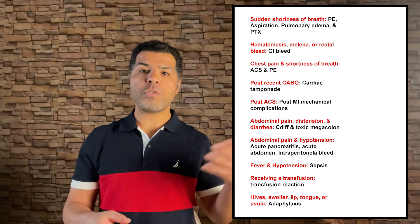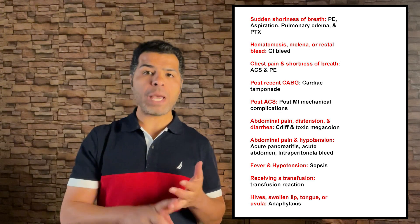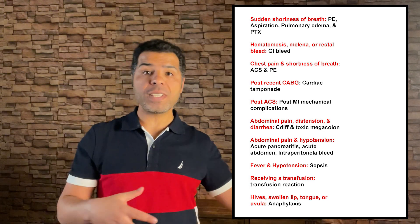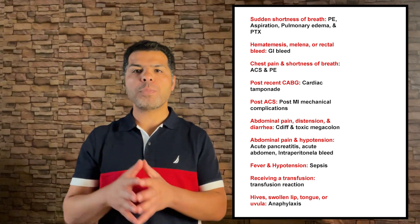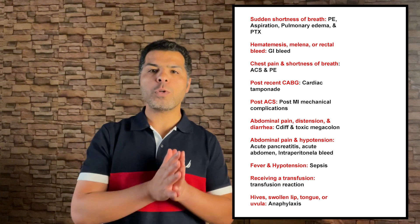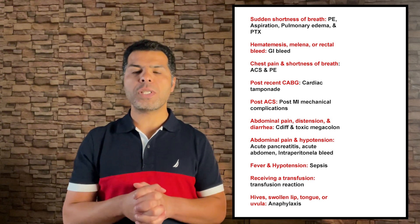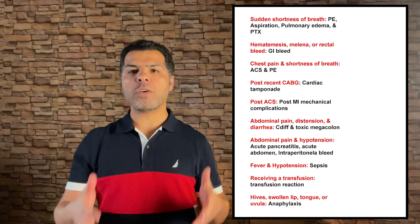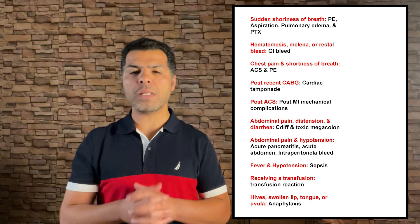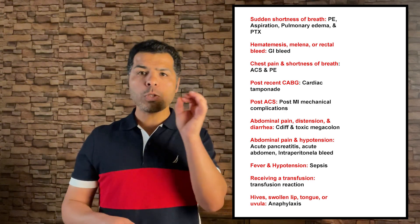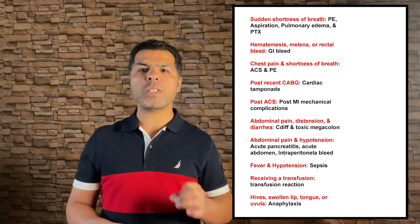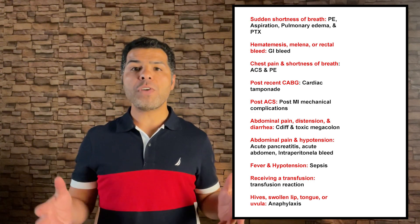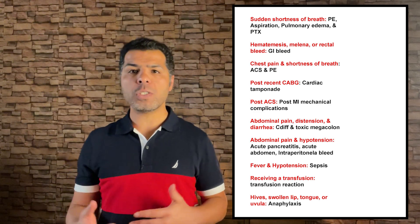If chest pain and shortness of breath, think of acute coronary syndrome and cardiogenic shock. Hypotension post-CABG — think of tamponade; obtain a stat echo and inform the surgeon immediately, especially if surgery was just done a day or two ago. Hypotension post-MI or revascularization — think of mechanical post-MI complications; obtain stat echo and inform the cardiologist immediately. Abdominal distension and diarrhea — think C. diff and toxic megacolon. Abdominal pain and hypotension — think acute pancreatitis, acute abdomen, or intraperitoneal bleed. Fever and hypotension — think sepsis and septic shock, also if a chronic indwelling Foley catheter is present for at least a few days. Think of transfusion reaction if the patient is receiving blood products. Think anaphylaxis if hives, itching, flushing, swelling of lips, tongue, or uvula are present.